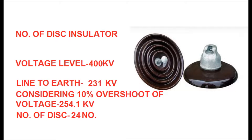For the 400 kV system, the line-to-line voltage is 400 kV. The line-to-earth voltage is 400 divided by √3, equal to 231 kV. Considering 10% overvoltage: 231 × 1.1 = 254.1 kV. Dividing 254.1 by 11 gives approximately 23. Adding 1 for safety gives 24 discs for suspension type string and 25 discs for tension type string in a 400 kV system.